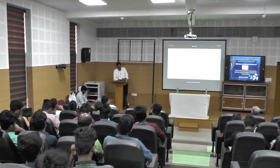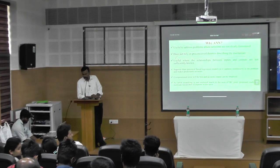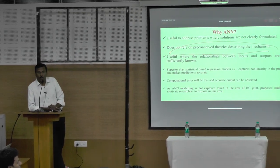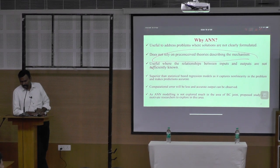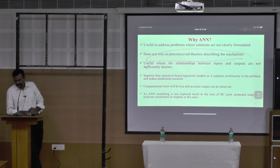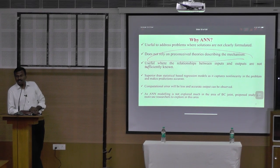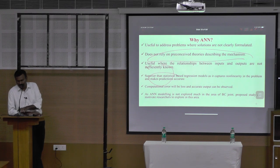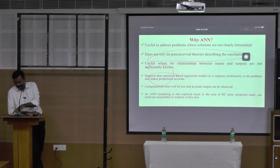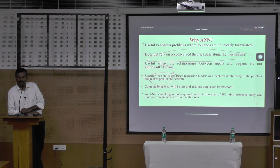ML is useful where the relationship between inputs and outputs is not sufficiently known. It is superior to statistical regression models because it captures non-linearity in problems and makes predictions more accurate. We need less computational error and accurate output — for that we need ANN. ANN modeling has not been explored much in the beam-column joint area; proposing this study can motivate research to explore this area. Very few people have used artificial neural networks to predict beam-column joint behavior.